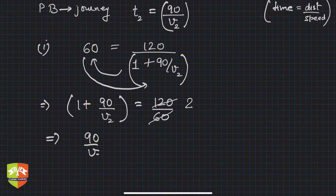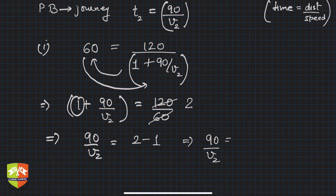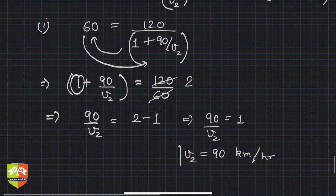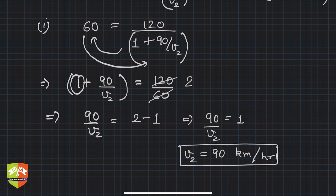From 1 + 90/v2 = 2, transposing gives 90/v2 = 2 − 1 = 1, so v2 = 90. Do not forget the units — since everything was in kilometers and hours, v2 = 90 kilometers per hour. So if the train runs the next 90 kilometers at 90 km/h after covering the first 30 kilometers at 30 km/h, the average speed for the entire trip will be 60 km/h.